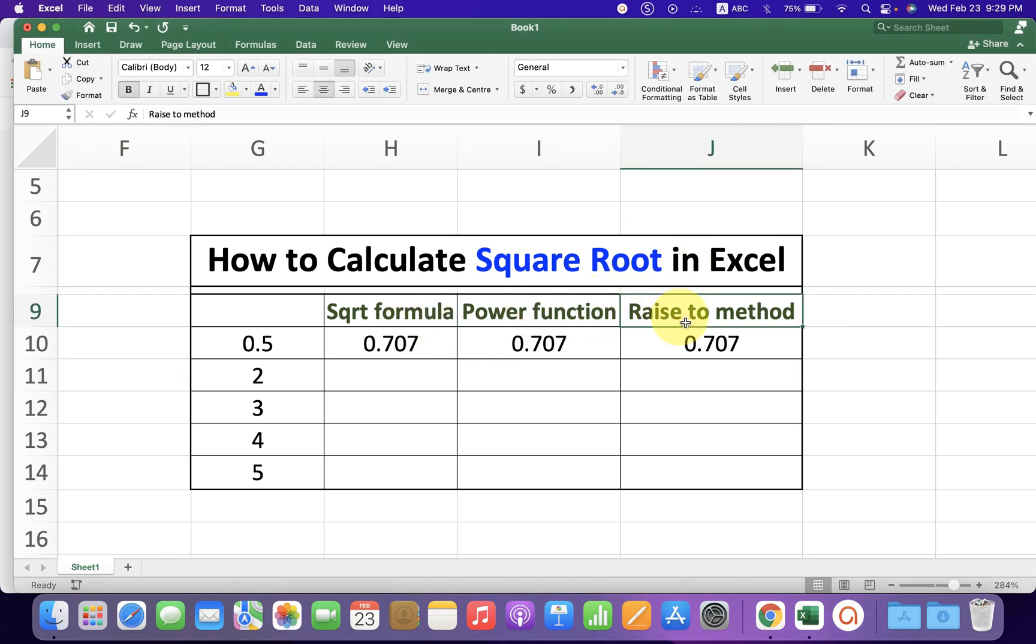Let's get started. In the first method, double click inside the cell. On your keyboard, type equals SQRT, opening bracket, and select the number. Or you can also type the number if you want.